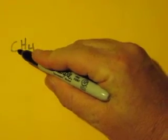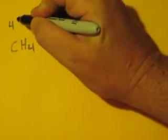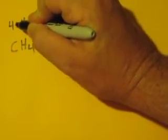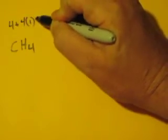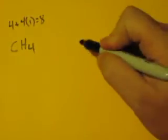This is the Lewis dot structure for methane, or if you're British, methane. We start with our valence electrons. Carbon has four valence electrons, and we have four hydrogens, each with one valence electron, for a total of eight valence electrons.